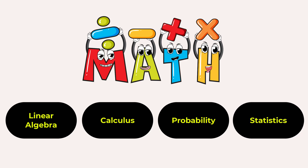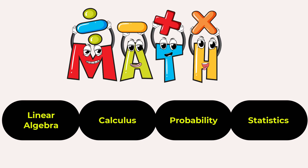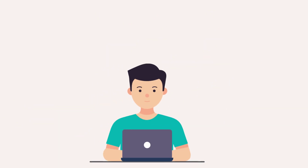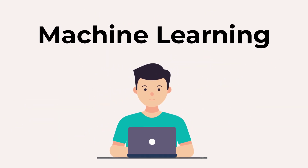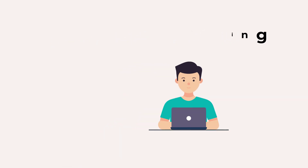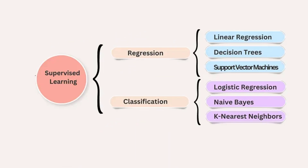The next thing you need to learn is machine learning — a way for computers to learn from data. There are many machine learning algorithms, such as support vector machines, random forests, KNN, and decision trees. These models help you analyze your data.